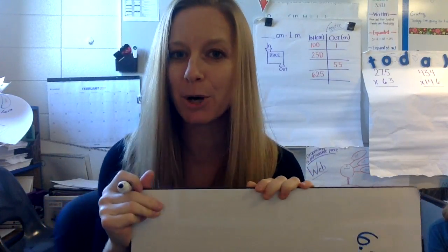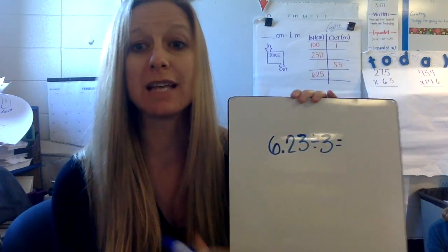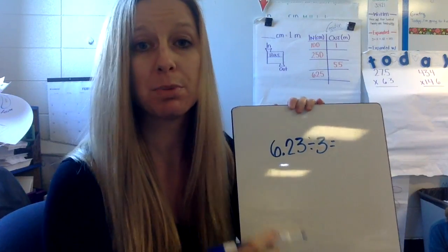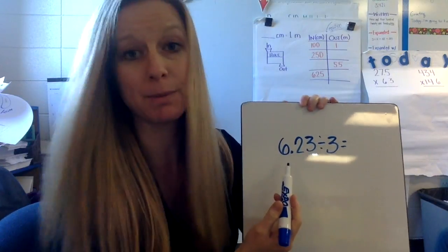Hi kiddos, it's Mrs. Plummer and I am back today. I am going to teach you how to use estimation when dividing to figure out where to place your decimal in your quotient. So our first problem here is we have 6 and 23 hundredths divided by 3.